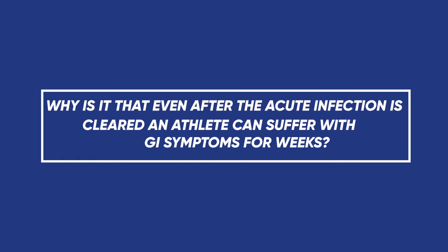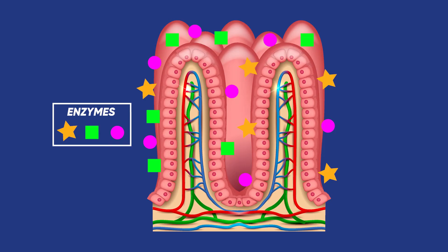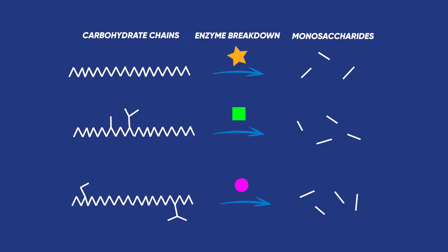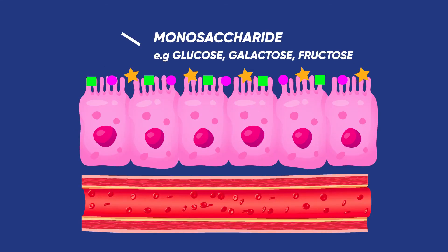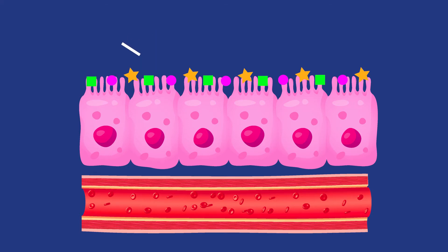To answer this question, we have to take a closer look at the intestinal digestion and absorption of nutrients. The small intestines contain lots of enzymes on its lining called the brush border. Enzymes here are responsible for breaking down carbohydrate chains to their smallest subunit molecule called monosaccharides. These small sugar molecules are the only forms of carbohydrates that can cross the intestinal wall and be absorbed into the bloodstream. The movement of sugars into the blood also promotes water absorption.